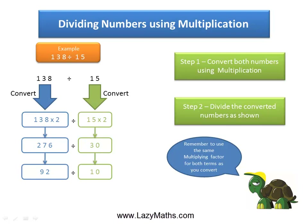So in this case, with 10, we have one zero. For an integer, the decimal point is always at the end of the number — so 92 becomes 92. We move the decimal point one place to the left, which puts it between 9 and 2, and we get 9.2 as our final answer.